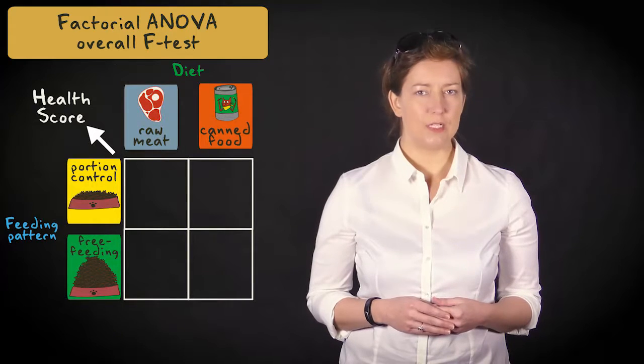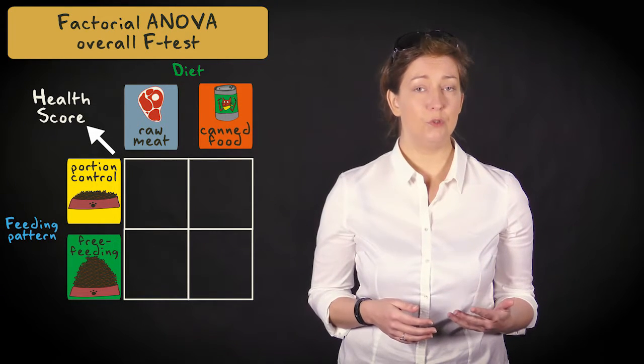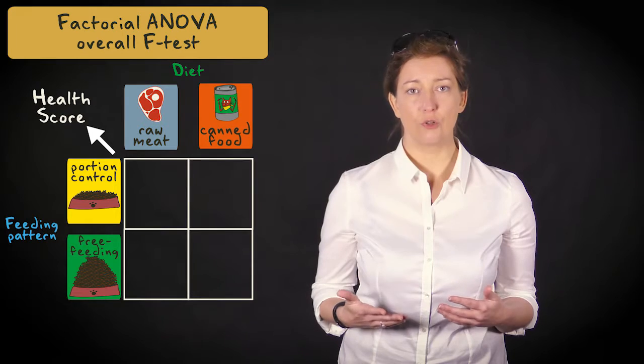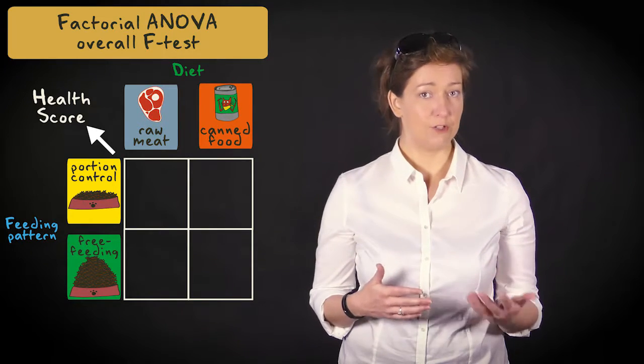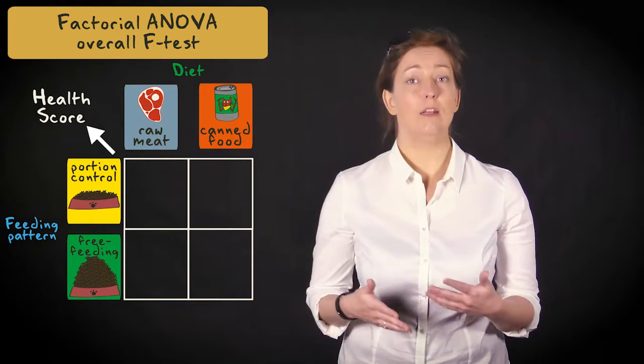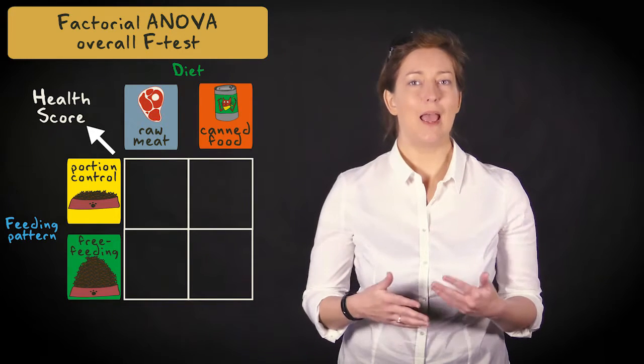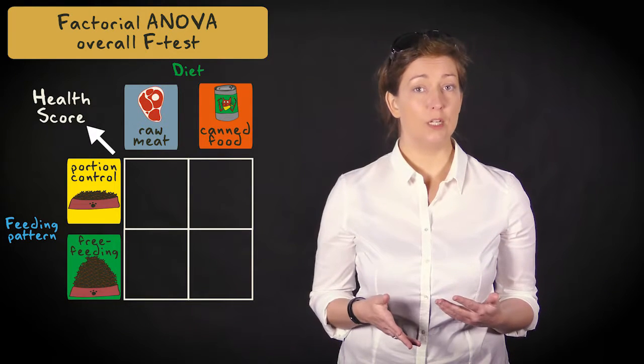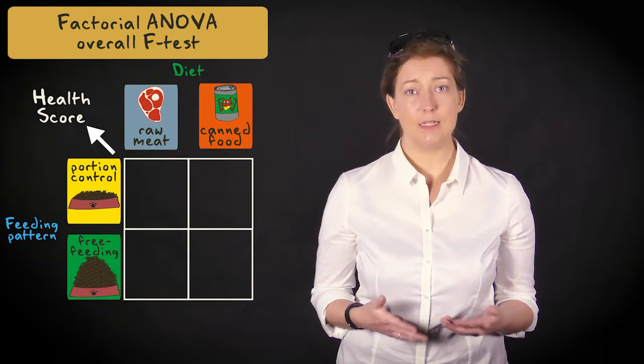Suppose we want to investigate the main effect of raw meat versus canned cat food, the main effect of portion control versus free feeding, and their interaction on cat health rated on a scale from 0 to 10. Cats are randomly assigned to one of four conditions that vary in terms of diet and feeding pattern.